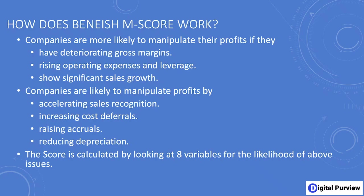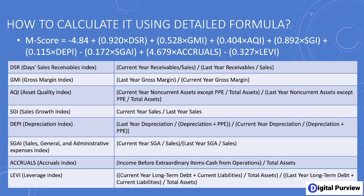The score is calculated by looking at eight variables for the likelihood of any of the issues already discussed. The detailed formula calculates a score based on these eight variables. The first variable is the DSRI, Days Sales Receivable Index — essentially whether receivables are going up or down. If receivables are going up, it might mean the company is using aggressive accounting to recognize sales early.